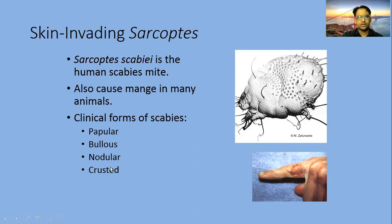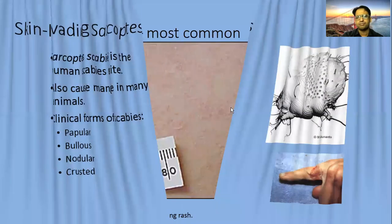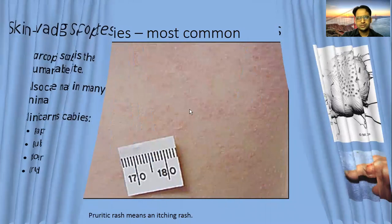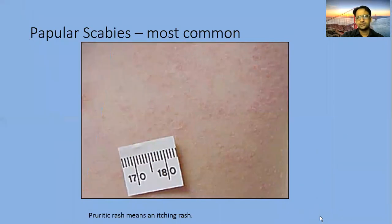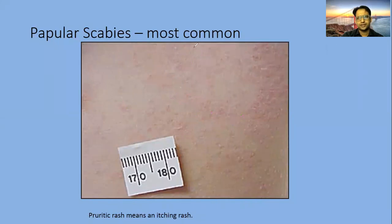Clinical forms of scabies include papular, globus, nodular, and crusted forms. Their appearance can vary. In papular form there are papules; in globular form there are nodules. In the crusted form, a layer of skin crust develops, causing skin roughness and rashes. These are the common presentations of scabies.